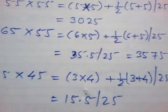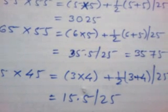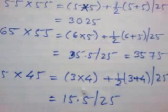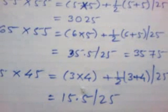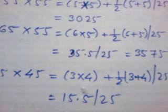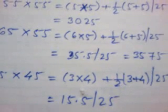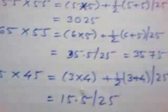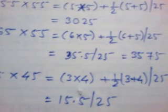Here we can see 65 into 55, that is 6 into 5 is 30, and half of 6 plus 5 is 5.5, that is 35.5 and 25. That 0.5 will be shifted to the next side, that is towards 25, and it will be added to 2, the tenth digit, that is 35.75.